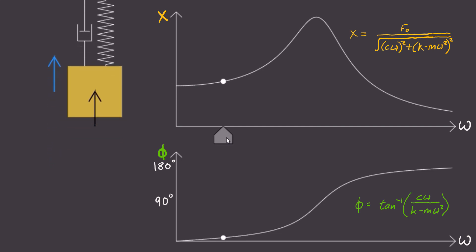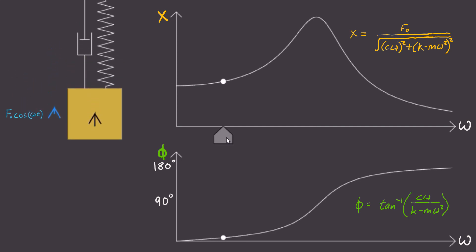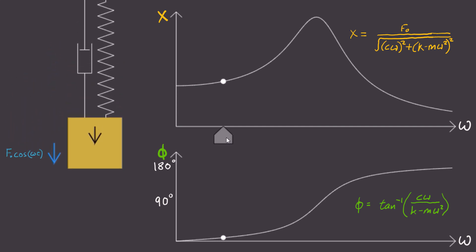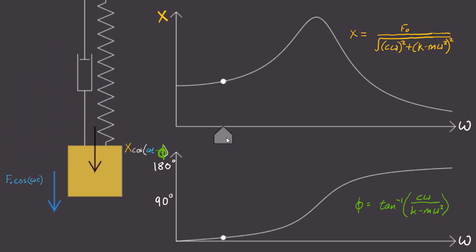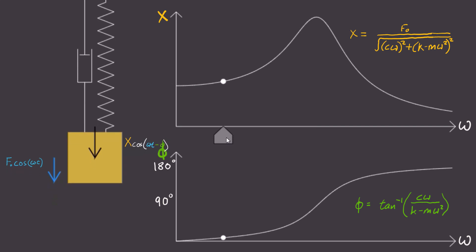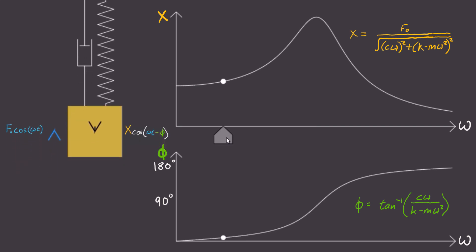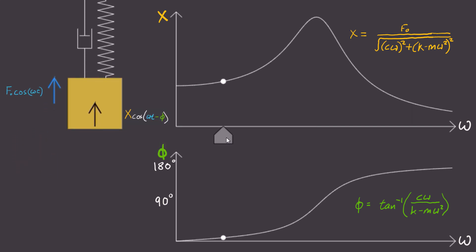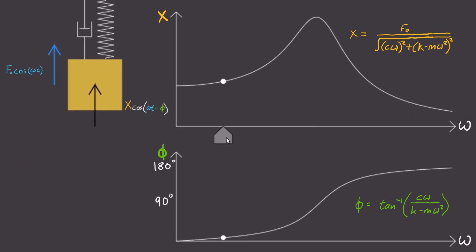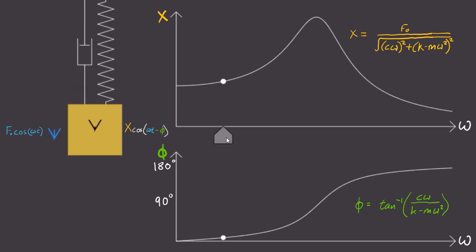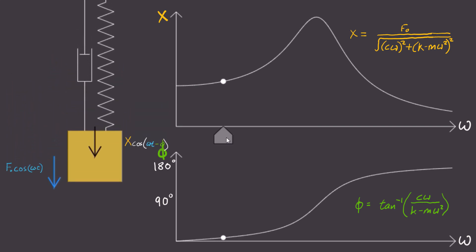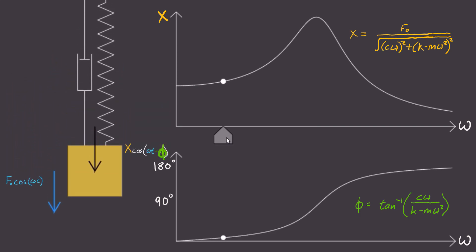This should be no surprise, because the driving force is F0 cosine omega t, and the steady state displacement is capital X cosine omega t minus phi. And since phi is close to 0 for this situation, they should be very closely synced.